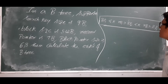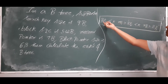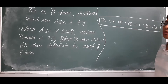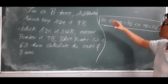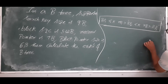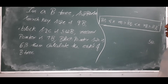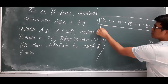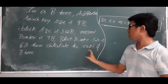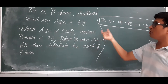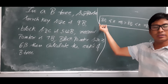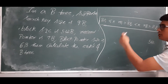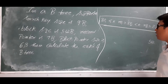The node will have the structure: block pointer, key, record pointer pair, block pointer, key, record pointer pair, and so on. The total size is 512 bytes. To calculate the order — the maximum number of children — we need to find how many block pointers it can allow, since maximum number of children equals the number of block pointers.